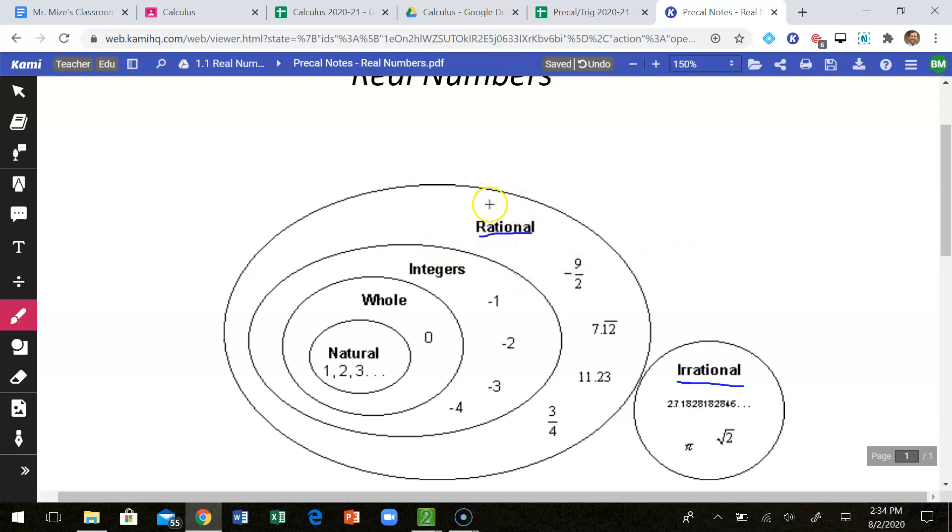Inside of rational numbers, you have a lot of subcategories, but in irrational, those things are kind of just out there by themselves. So I'll start with rational and I'll go all the way to the inside. In the first subcategory,